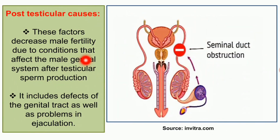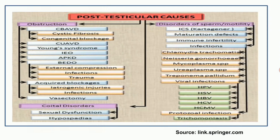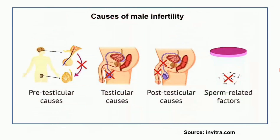Post-testicular causes decrease male fertility due to conditions that affect the male genital system after testicular sperm production. These include defects of the genital tract as well as problems in ejaculation, such as seminal duct obstructions. Overall, the main categories — pre-testicular hormonal imbalance, testicular causes, post-testicular causes, and sperm-related factors — are the primary causes of male infertility.